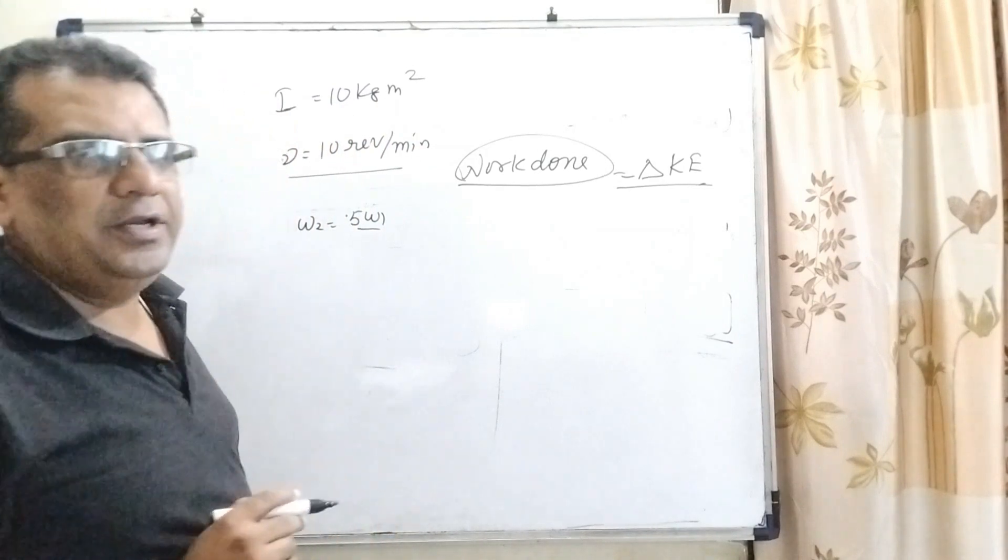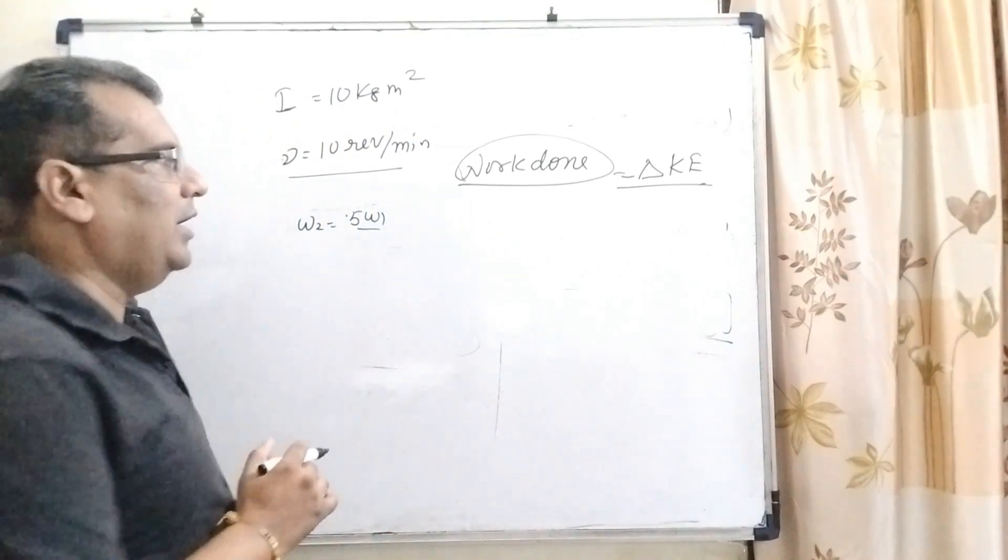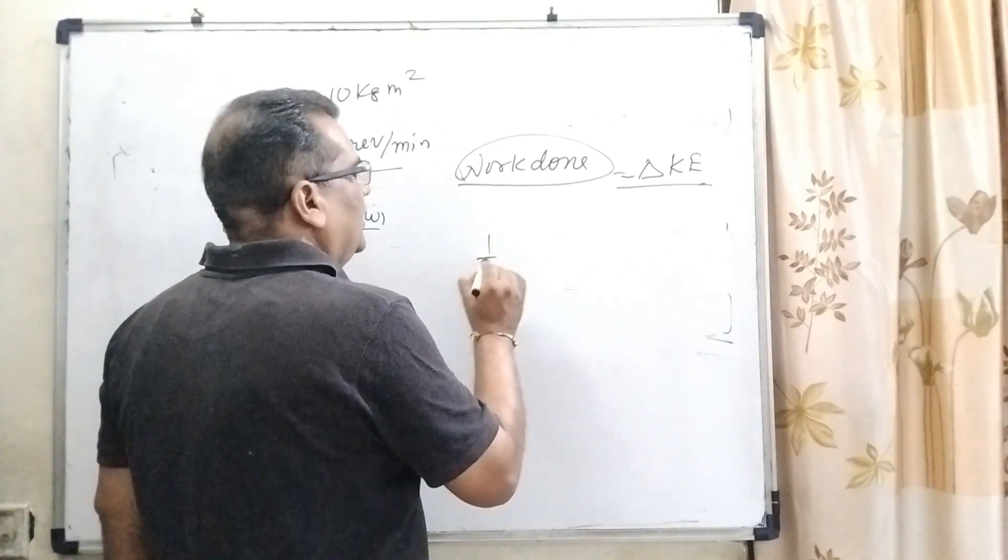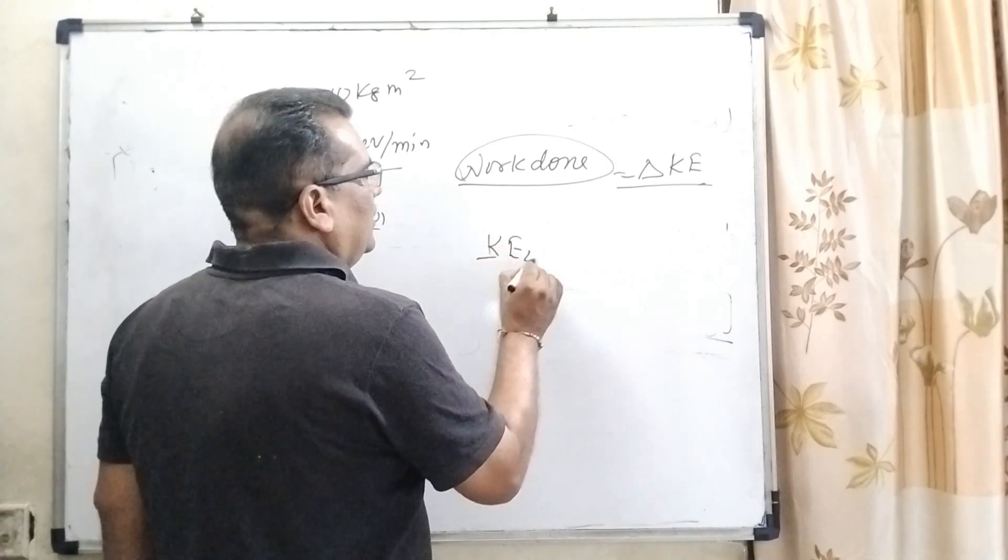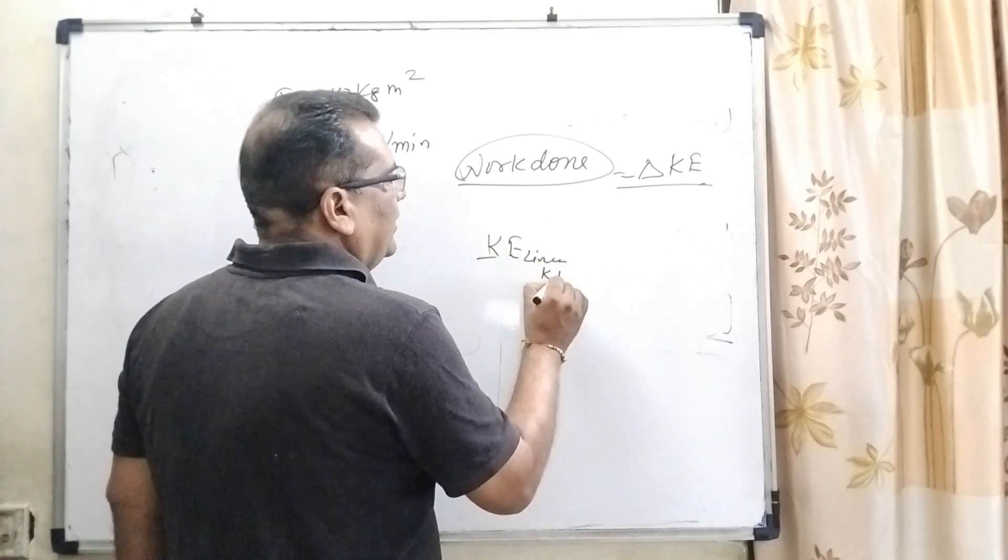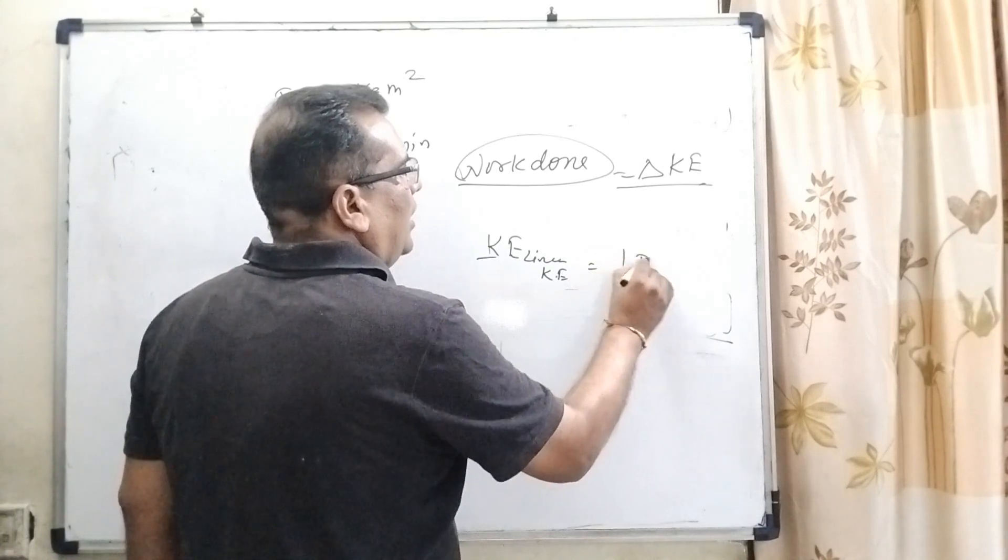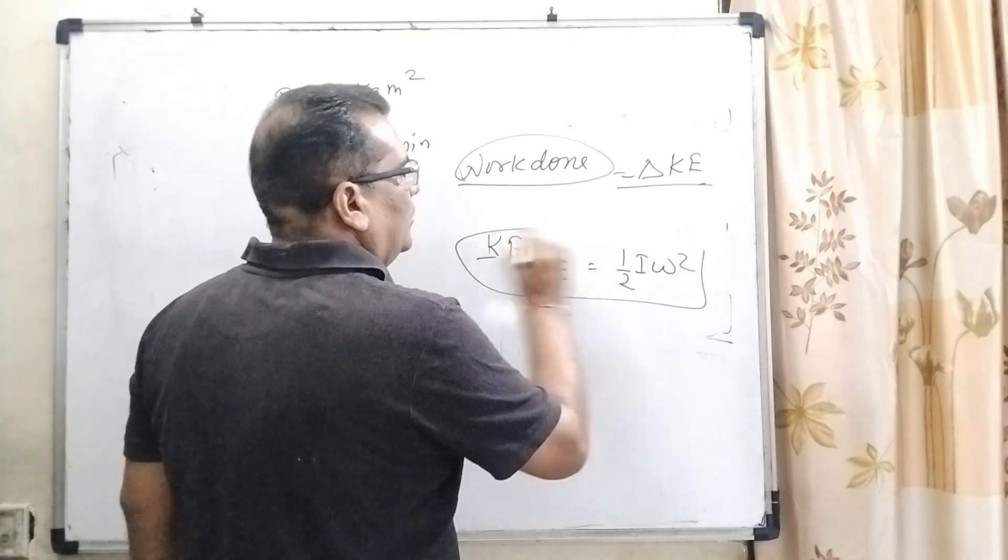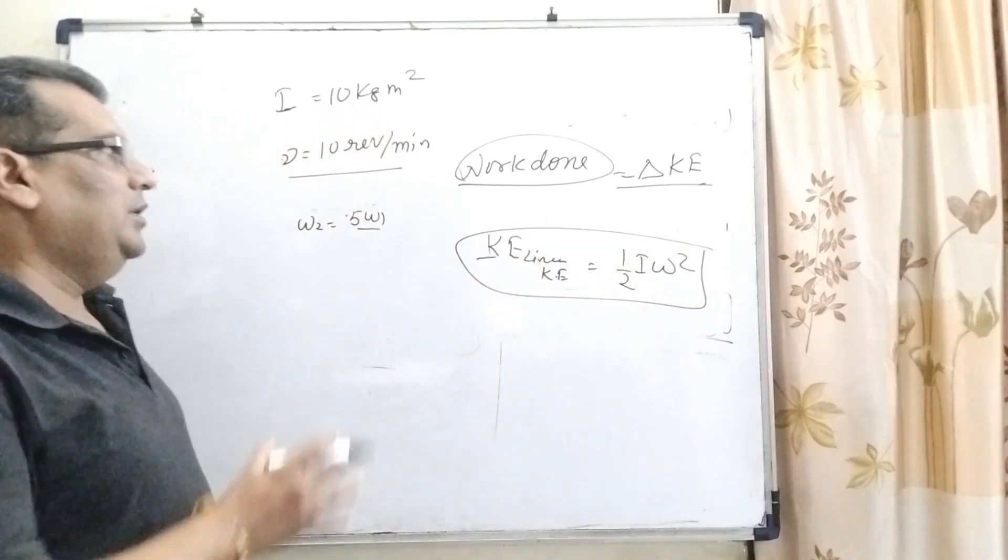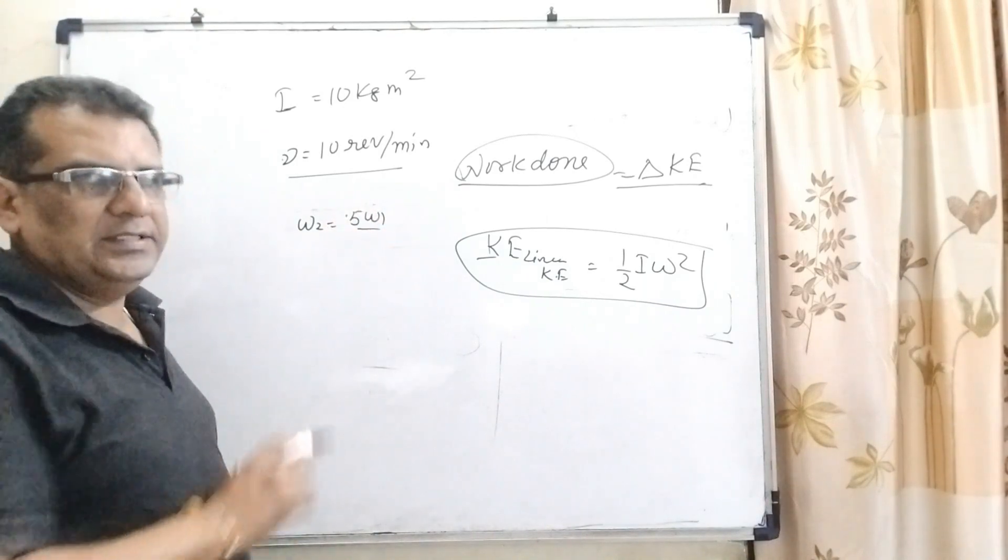And what is the relation of linear kinetic energy and angular kinetic energy or rotational kinetic energy? That is, kinetic energy is equal to 1 by 2 i omega square. So therefore, in this question, we have to be using this concept.